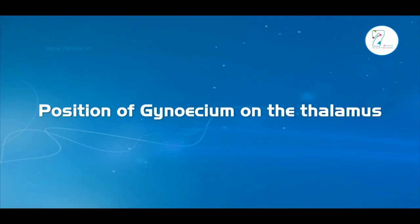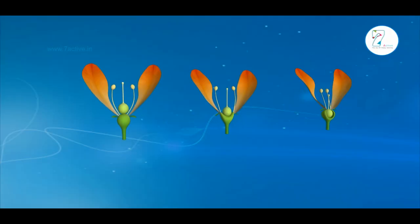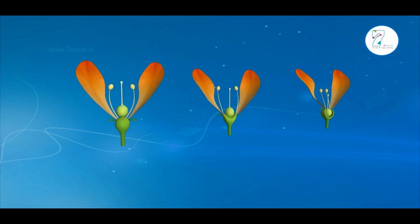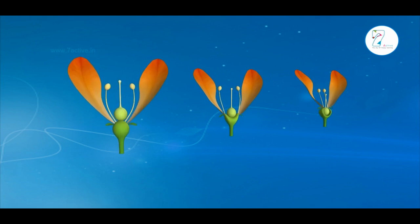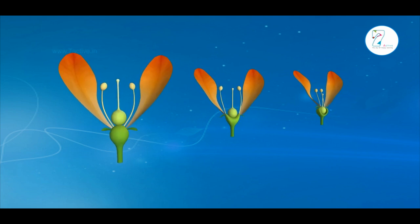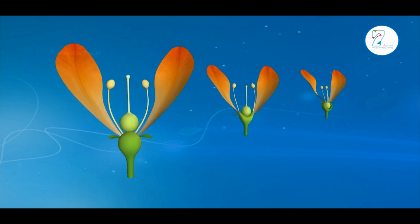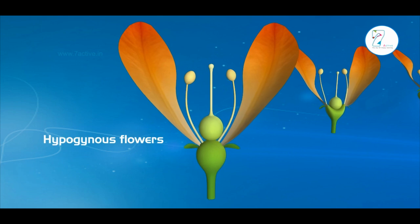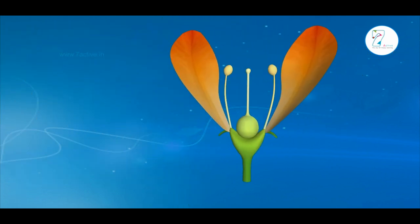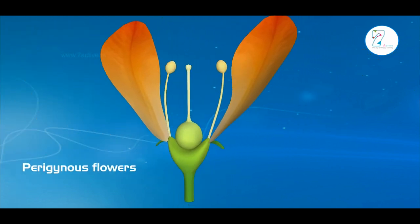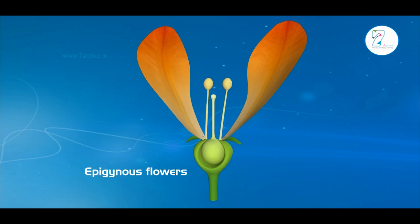Position of gynoecium on the thalamus. Based on the position of gynoecium on the thalamus in relation to other floral parts, flowers are divided into three types as follows: 1. Hypogynous flowers, 2. Perigynous flowers, and 3. Epigynous flowers.